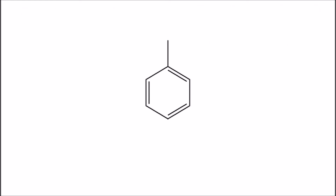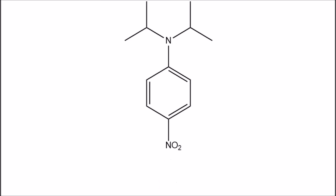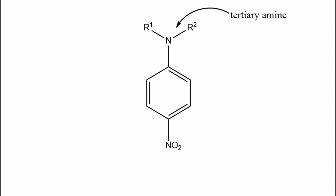For example, if we wanted to make a para-nitrobenzene, the other group would need to be electron donating, and a larger group would sterically hinder ortho substitution and increase the yield of the para product, so an ideal substituent would be a tertiary amine.